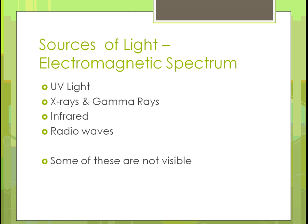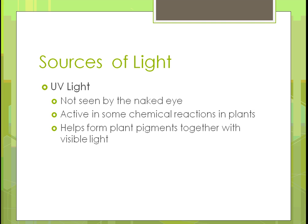The sources of light we're concerned with are UV light, ultraviolet light, x-rays and gamma rays — those are the rays used in medical x-rays and can be dangerous — and then infrared and radio waves, some of which can't be seen on the spectrum. UV light is not seen by the naked eye, but it drives chemical reactions in plants. The UV light is what helps plant pigments form from visible light.